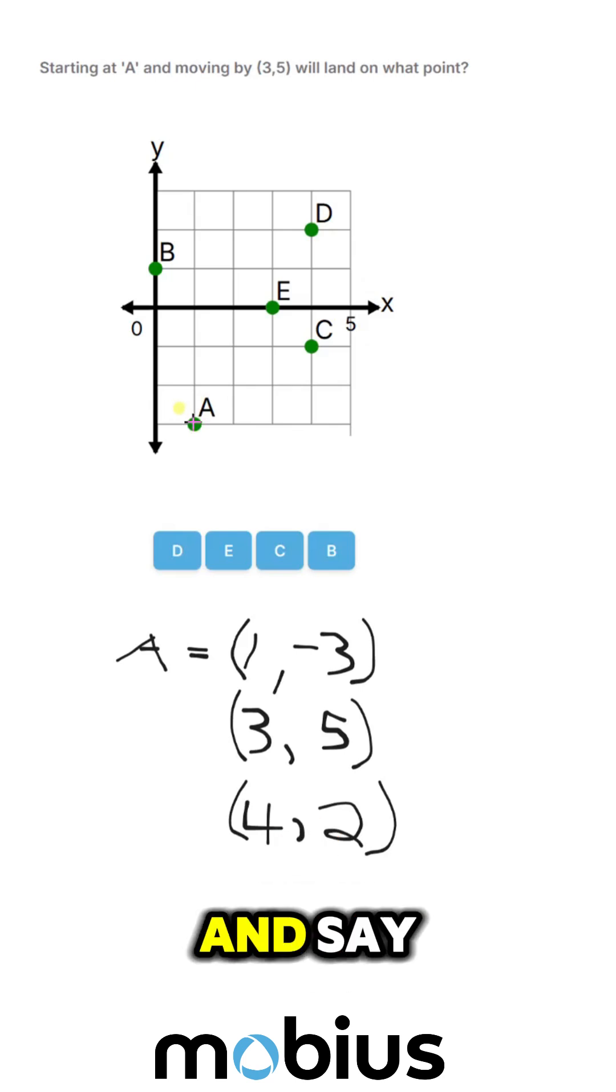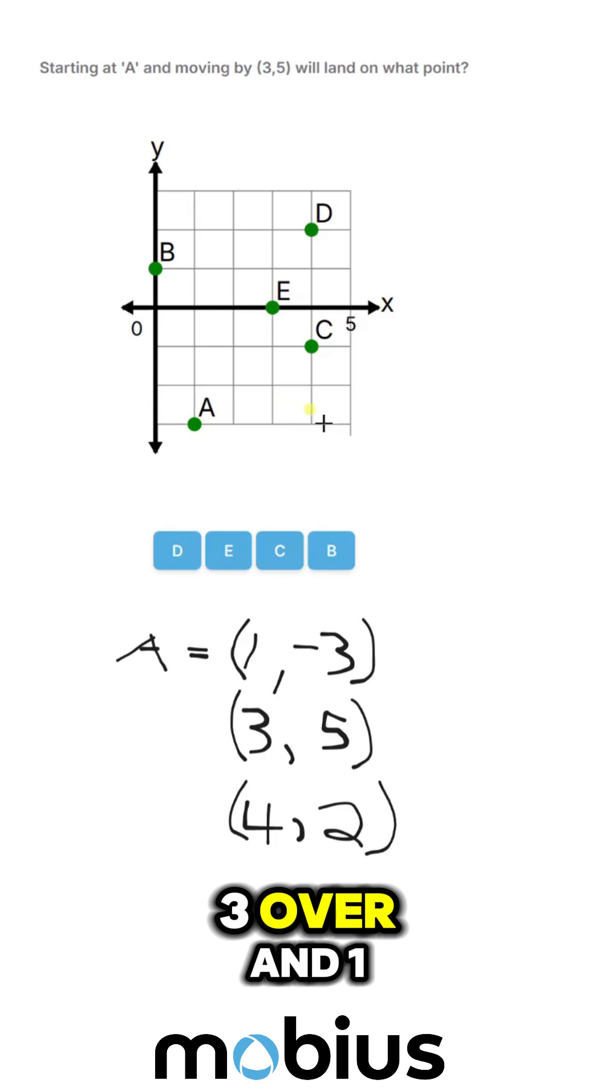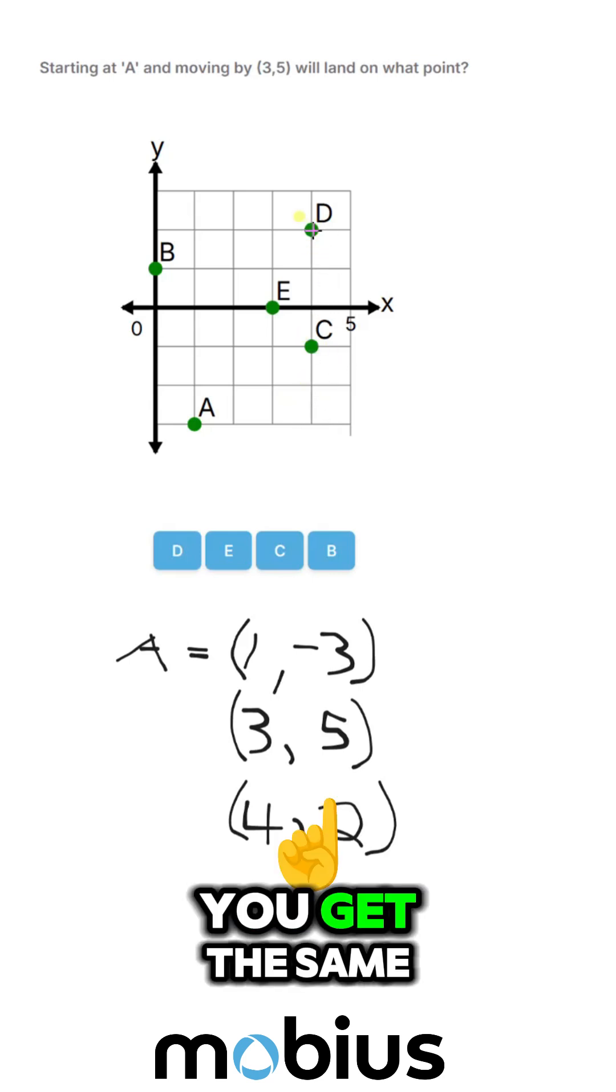Now you can look at it this way and say start at A and move 1, 2, 3 over, and 1, 2, 3, 4, 5 up. You get the same result.